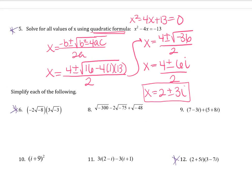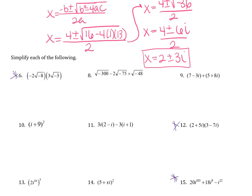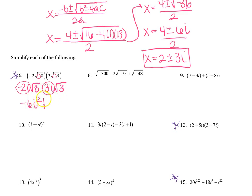When reducing radicals with negatives underneath them, make sure you take out the i's first before you start multiplying — otherwise your answer will be off by a negative. So this is negative 2i radical 8 times 3i radical 3. Multiply coefficients and radicands: negative 6i squared, radical 24. Since i squared is negative 1, and the square root of 4 is 2, simplifying gives 12 radical 6 as your final answer.